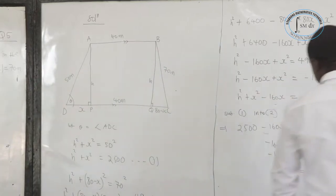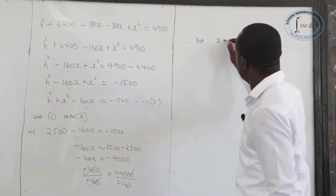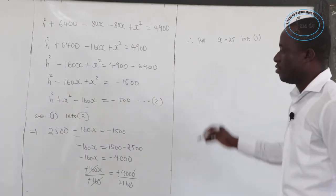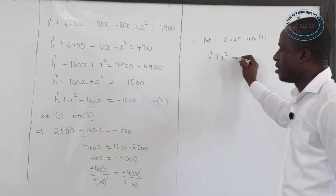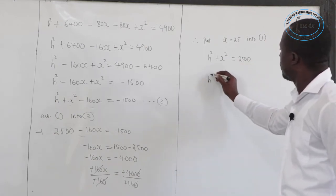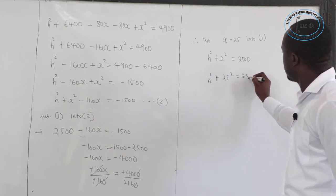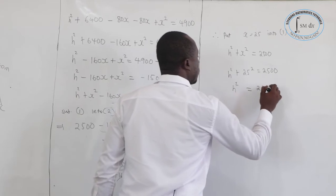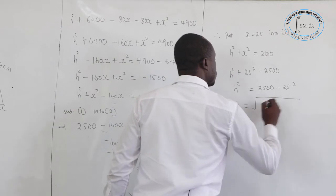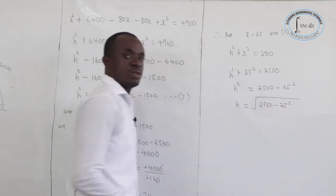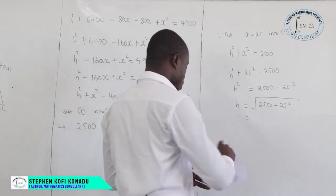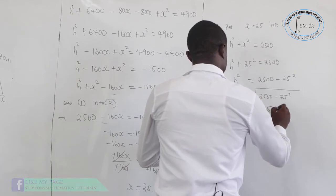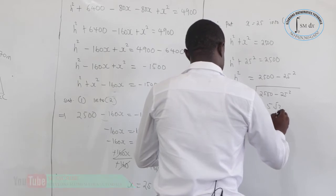Now let's find the height. Substituting X equals 25 into equation 1: H squared plus 25 squared equals 2,500. So H squared equals 2,500 minus 625. Using the calculator, H equals 25 root 3, which is the same as 43.301.